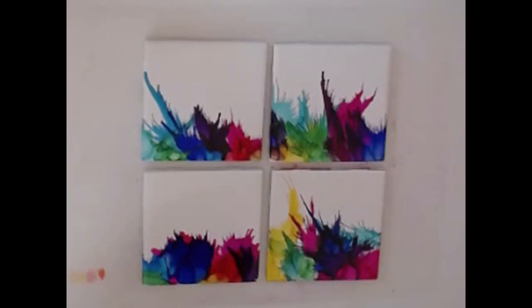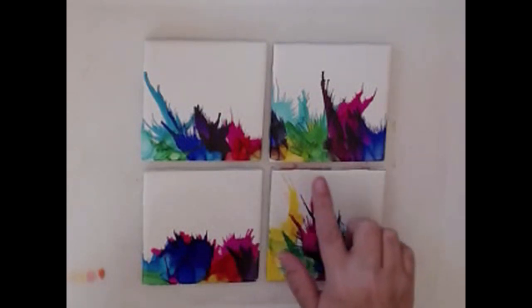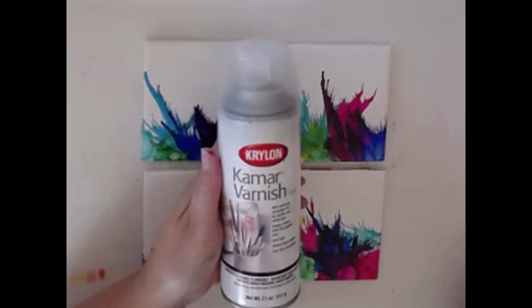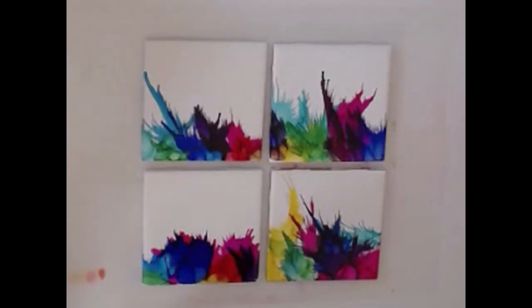Now that I have all four coasters done to my liking, I'm going to seal them. I am going to use KMAR Varnish. Now you can use other sealers if you like, but keep in mind those other sealers may cause a splotchy appearance to your alcohol ink.